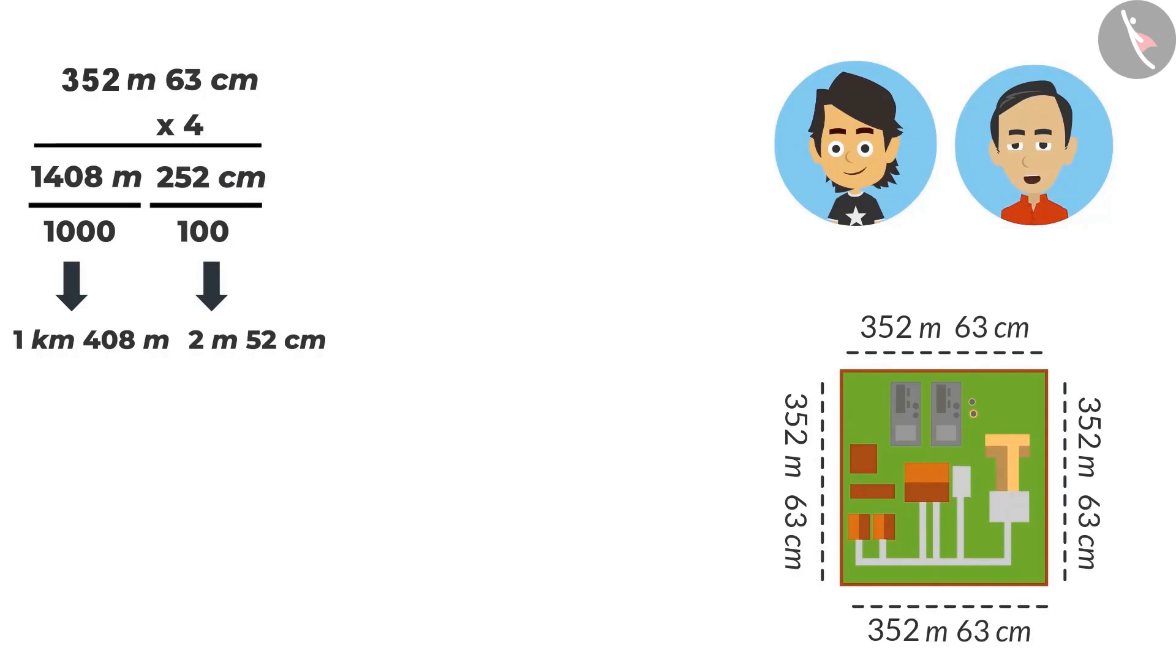Absolutely correct. Now tell me, how much is the total length? Total length would be 1 kilometre, 408 metres and 2 metres, 52 centimetres. But when there are two values in the metre, they can be added. Yes, then it would be better. This means the total length of your factory boundary would be 1 kilometre, 410 metres and 52 centimetres.